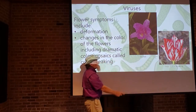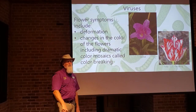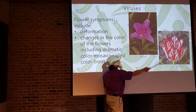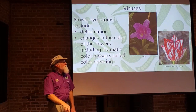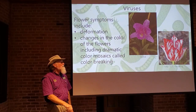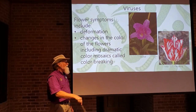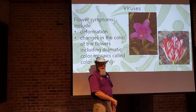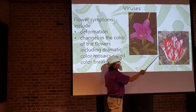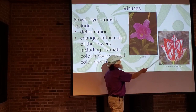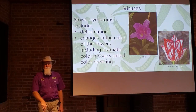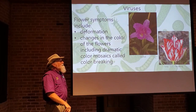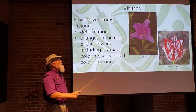Color breaking: this tulip has color streaks going through its petals and years ago, before they knew what was causing this, these tulips were very valuable — some of the highest cost tulips on the market. It wasn't until much later, after studying viruses in more detail, that they found out this streaking was actually a viral infection. Its main symptom was this color pattern on the tulips, and even though it's a disease, it actually made these tulips more valuable.